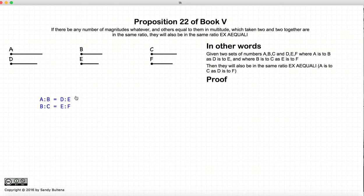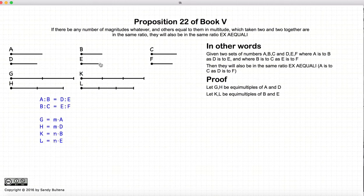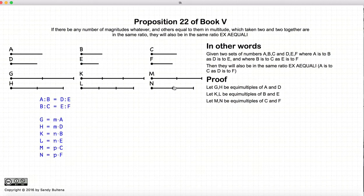So to do this, again we start off with our initial conditions, and we create two new lines, G and H, so that they are equal multiples of A and D. Two more lines, K and L, which are equal multiples of B and E. And finally, another two lines, M and N, which are equal multiples of C and F.